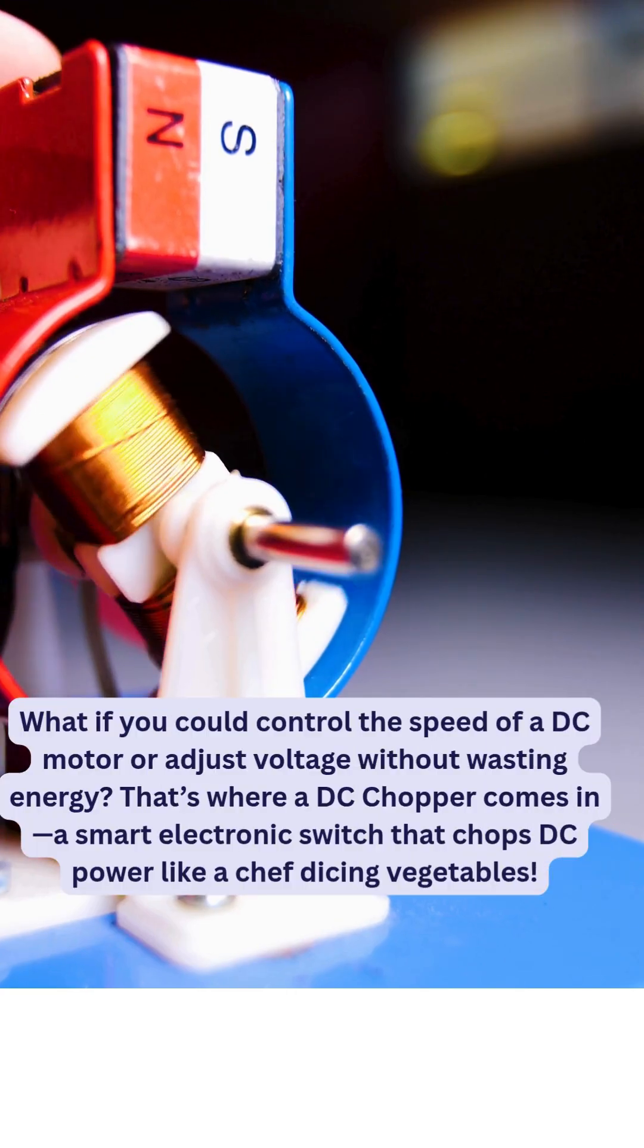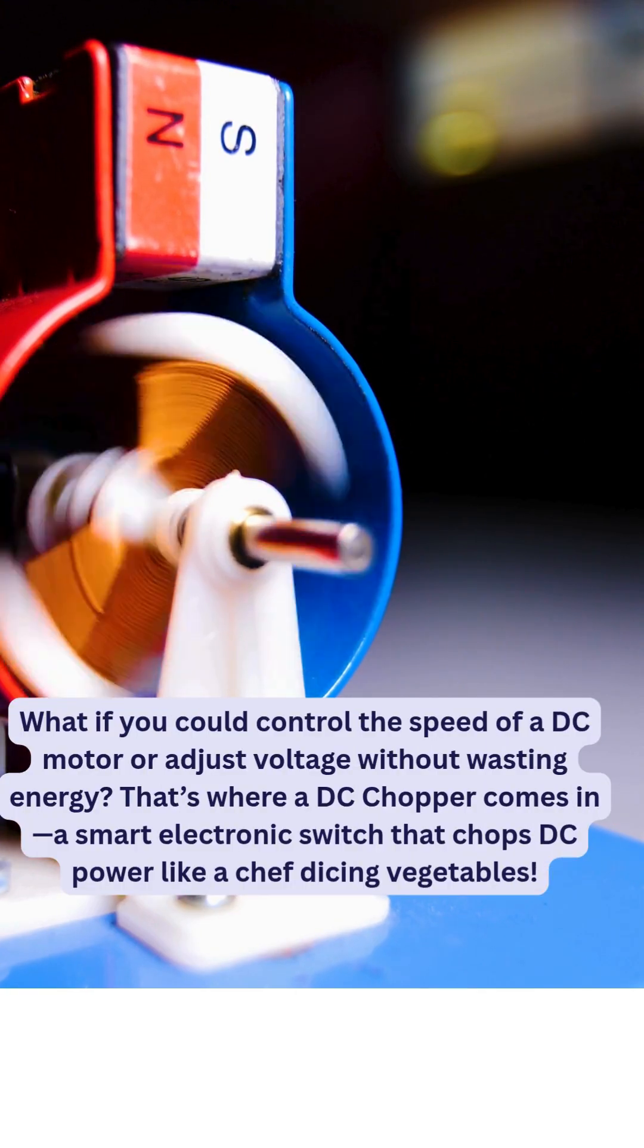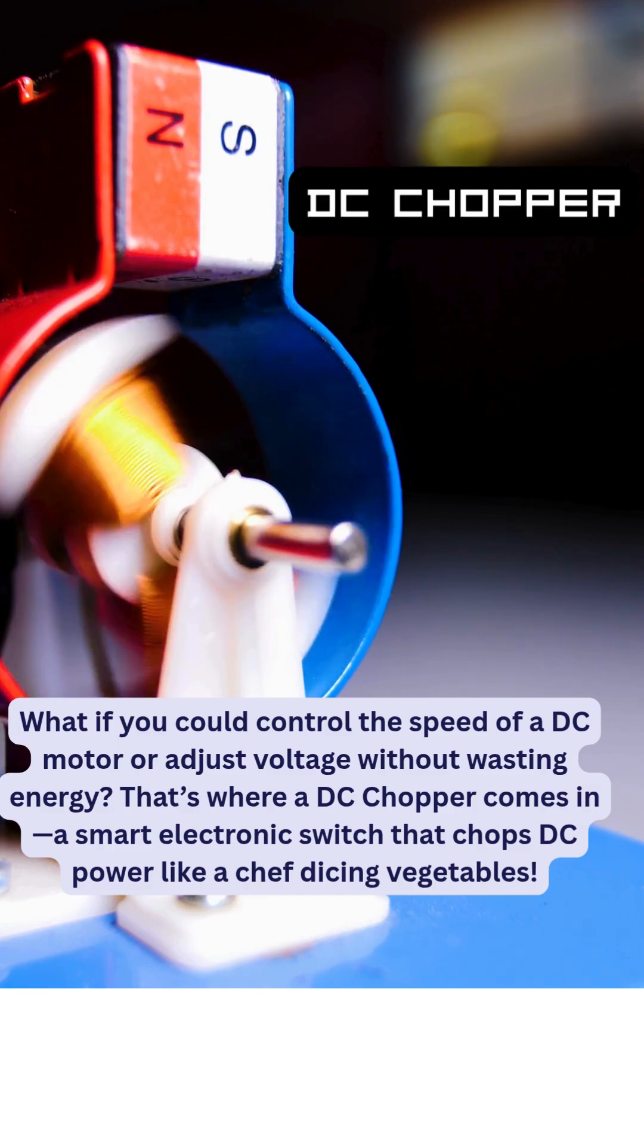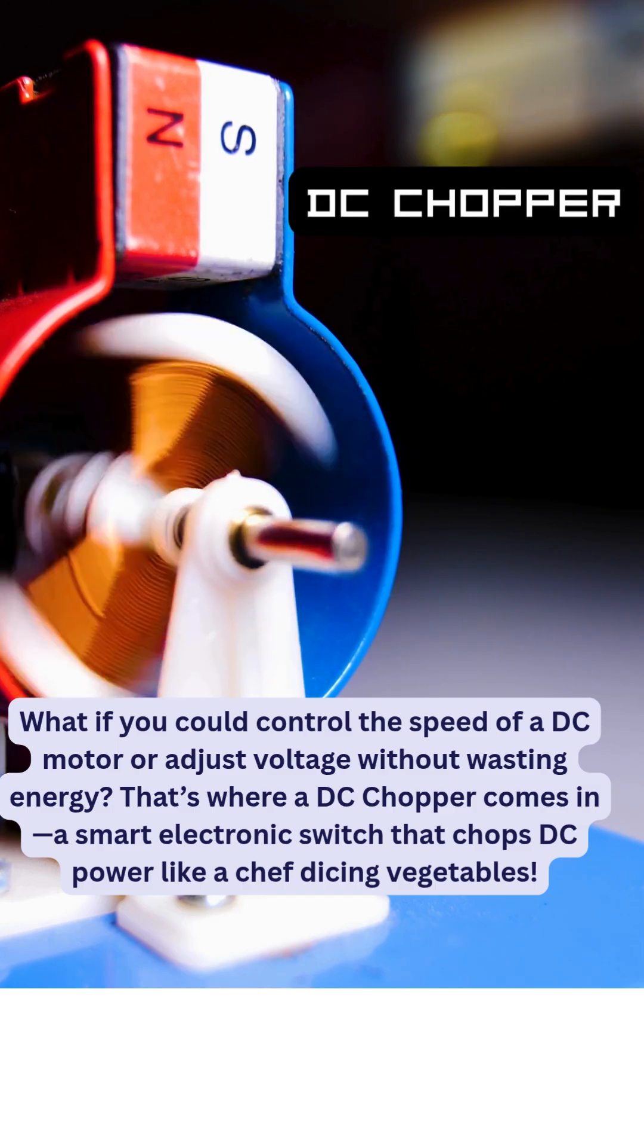What if you could control the speed of a DC motor or adjust voltage without wasting energy? That's where a DC chopper comes in, a smart electronic switch that chops DC power like a chef dicing vegetables.